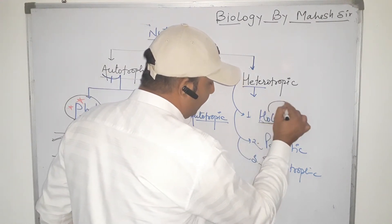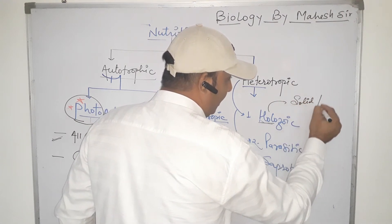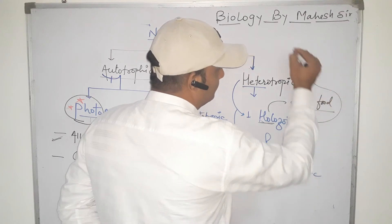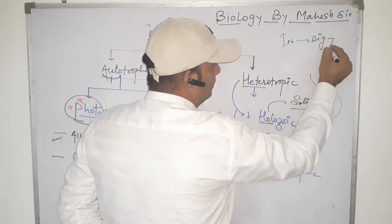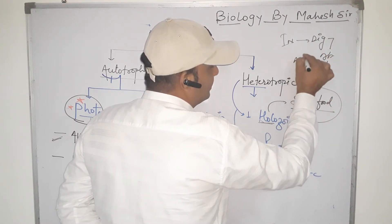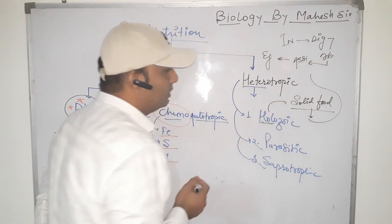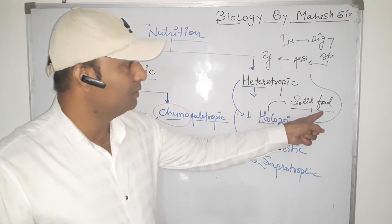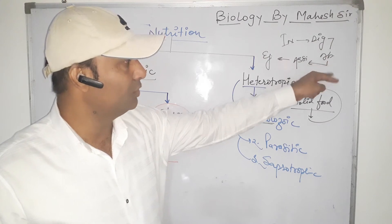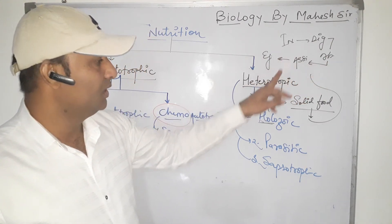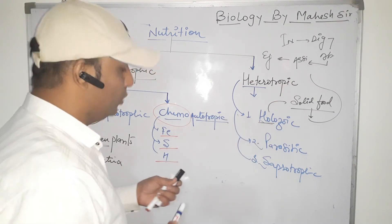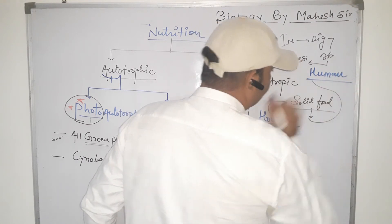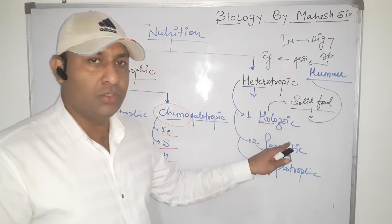The first type is holozoic nutrition, in which the organism engulfs solid food. The process involves ingesting solid food, then digesting it, absorbing the digested food, assimilating it, and finally ejecting the undigested food. Examples of holozoic mode of nutrition include humans and amoeba, both of which use solid food and follow this pathway.